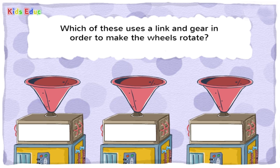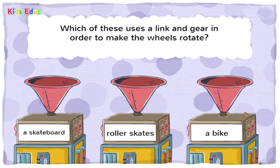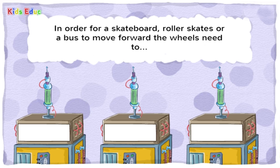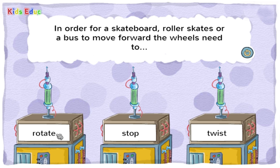Which of these uses a link and gear in order to make the wheels rotate? A skateboard. Roller skates. A bike. — A bike. You got it! A link is something that connects two things together. In order for a skateboard, roller skates, or a bus to move forward, the wheels need to rotate. — Rotate. That's right! When something rotates, it means it turns or spins on a fixed point.